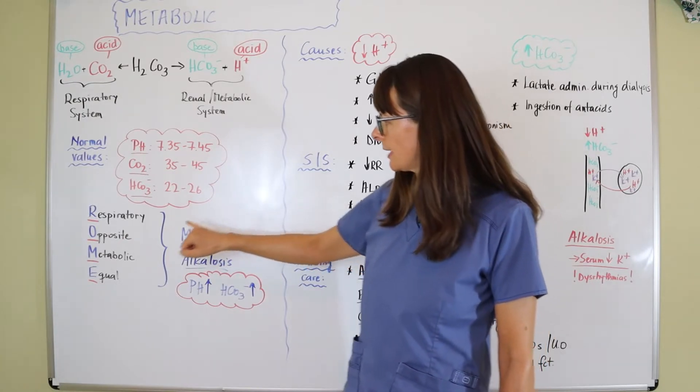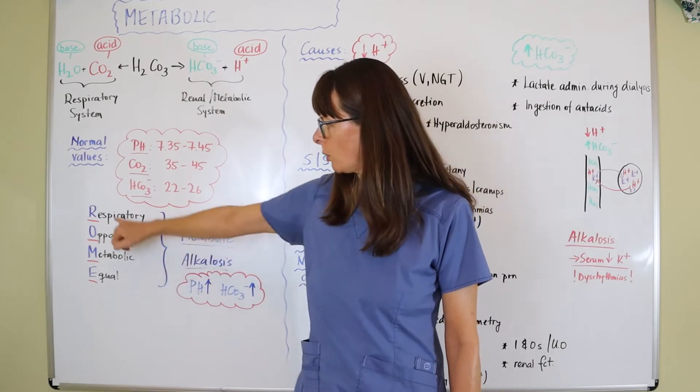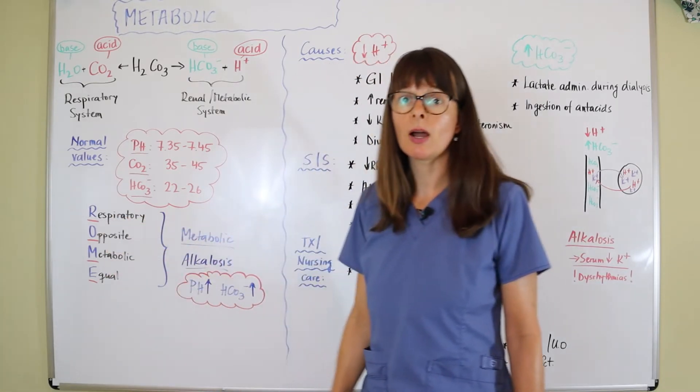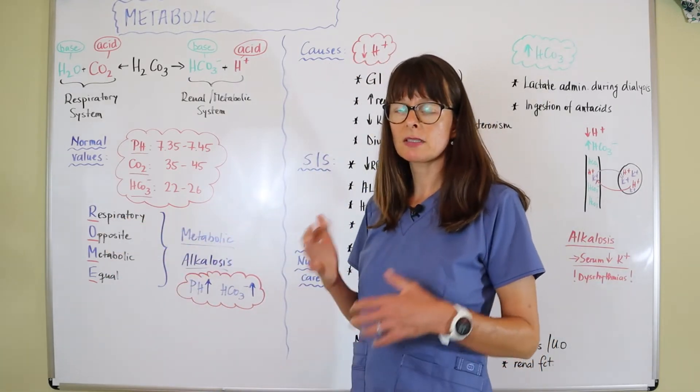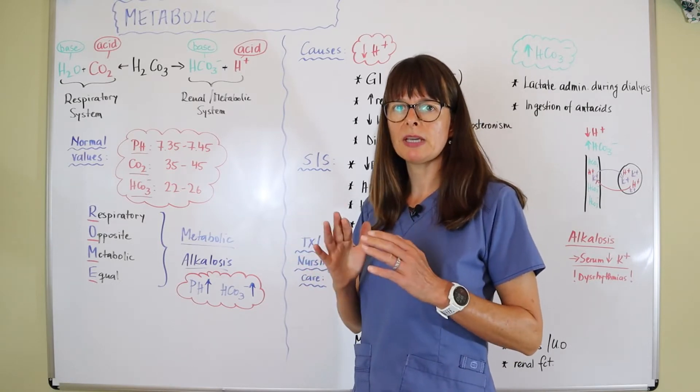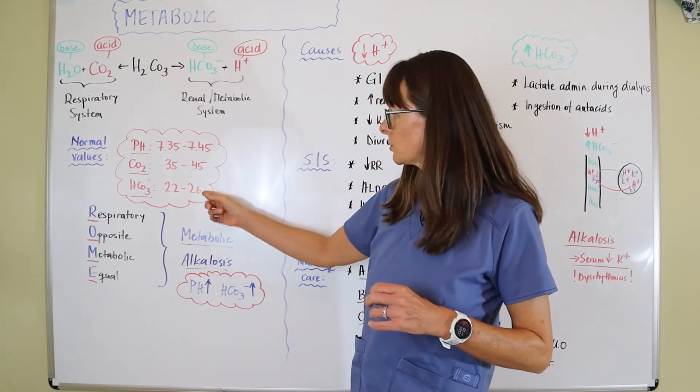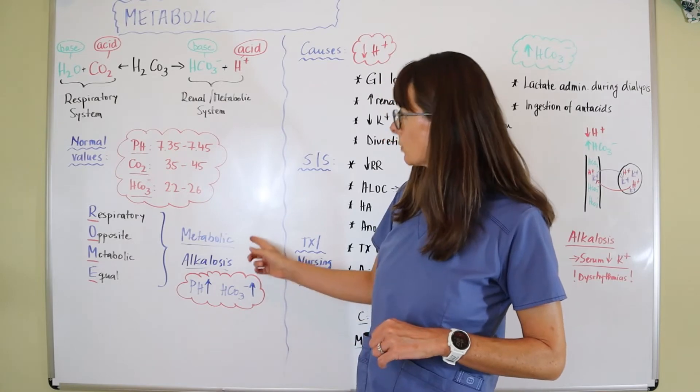This acronym, respiratory opposite metabolic equal, ROME, I find very helpful because it tells us which way the pH and either the CO2 or the bicarbonate move.